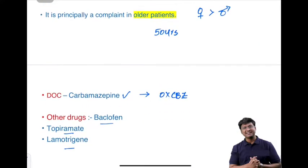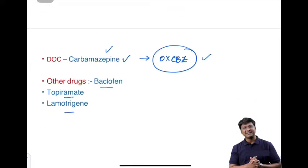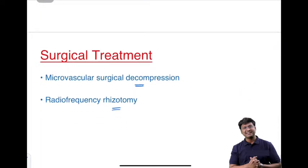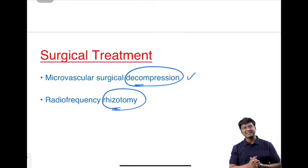The drug of choice in trigeminal neuralgia is carbamazepine; if there is no response, give oxcarbazepine. Alternative drugs include baclofen, topiramate, and lamotrigine. Surgical treatments include microvascular surgical decompression and radiofrequency rhizotomy. In summary, trigeminal neuralgia presents with stabbing pain lasting only a few seconds, in the distribution of the trigeminal nerve.